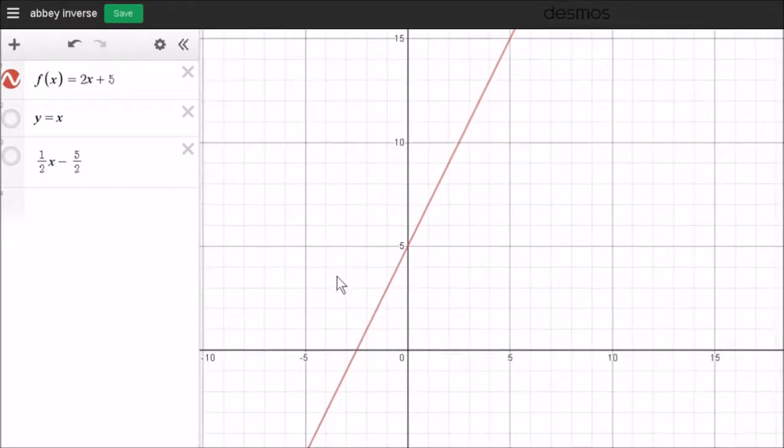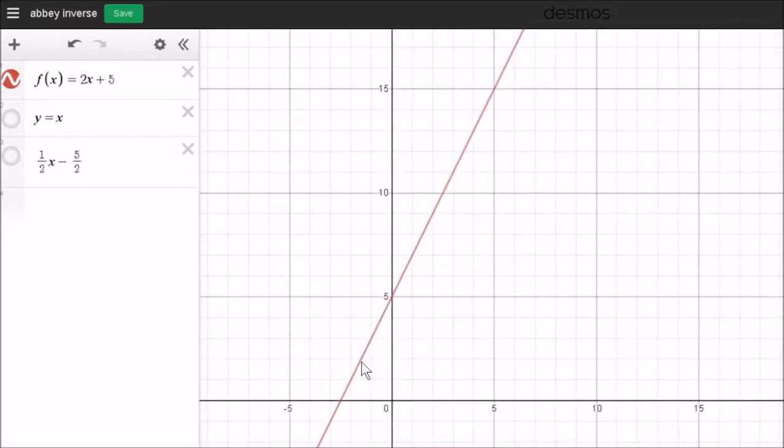So what do we mean by the inverse? Well in this instance here let's say we pick the point 5. When we go to the point 5 we go up to the function and when we meet it there we go across to 15. Now what the inverse function does is it takes the 15 and it maps us back to 5.